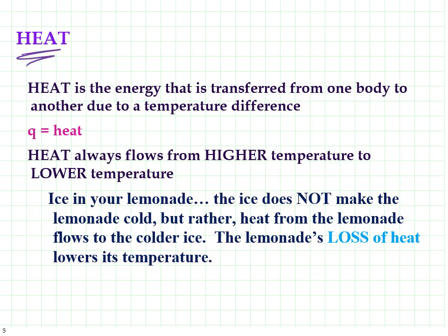The word heat is kind of quirky in chemistry. Heat is actually the energy that is transferred from one body to another due to temperature differences. We use the letter Q for heat — which is weird because there's definitely not a Q in heat — but Q is heat. Heat always flows from higher temperatures to lower temperatures. Interestingly, if you put ice in your lemonade, the ice is not making your lemonade cold. Your lemonade is giving energy away to the ice to warm it up, and that's what makes the lemonade get colder. The ice does not make the lemonade cold; the lemonade makes the ice warmer.